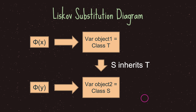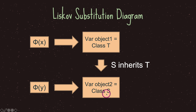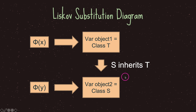I went ahead and created a diagram for you. We have our group X and it's basically made up of objects that have the class T, and our class T is a parent of class S, and class S is part of a group of Y. The only thing that's of importance is that we have a parent class and we have a child class.